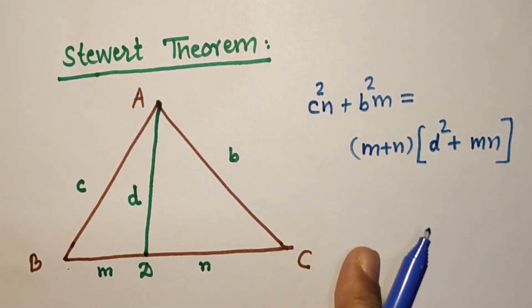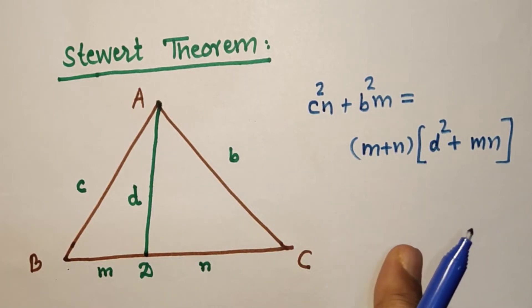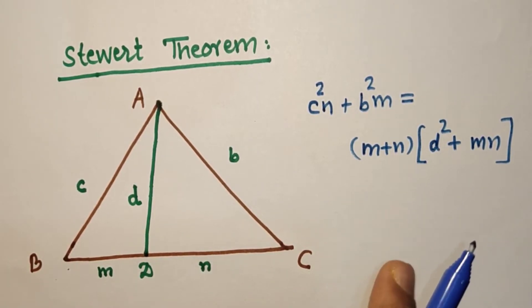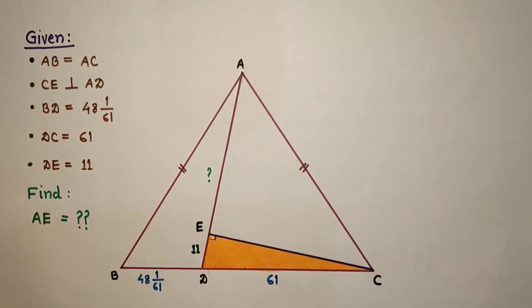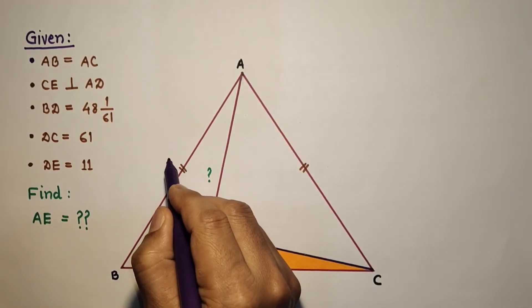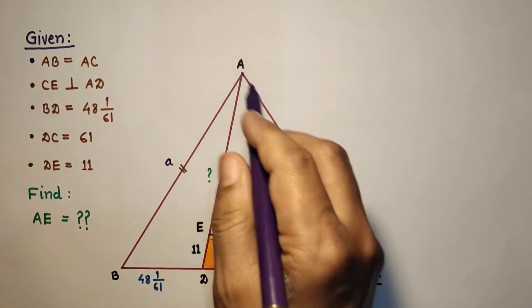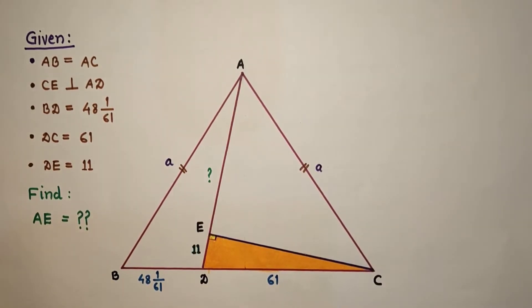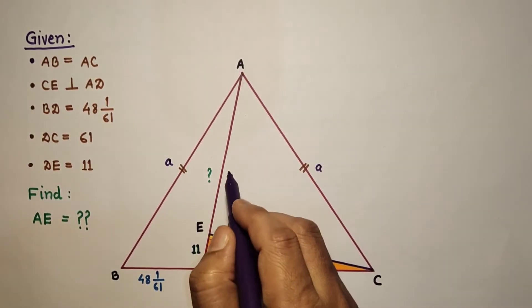We can derive this theorem using Pythagoras theorem. Now we apply this theorem to our question. Let AB = AC = a, since the two sides are equal. Let AE, which is to be found, equal b.